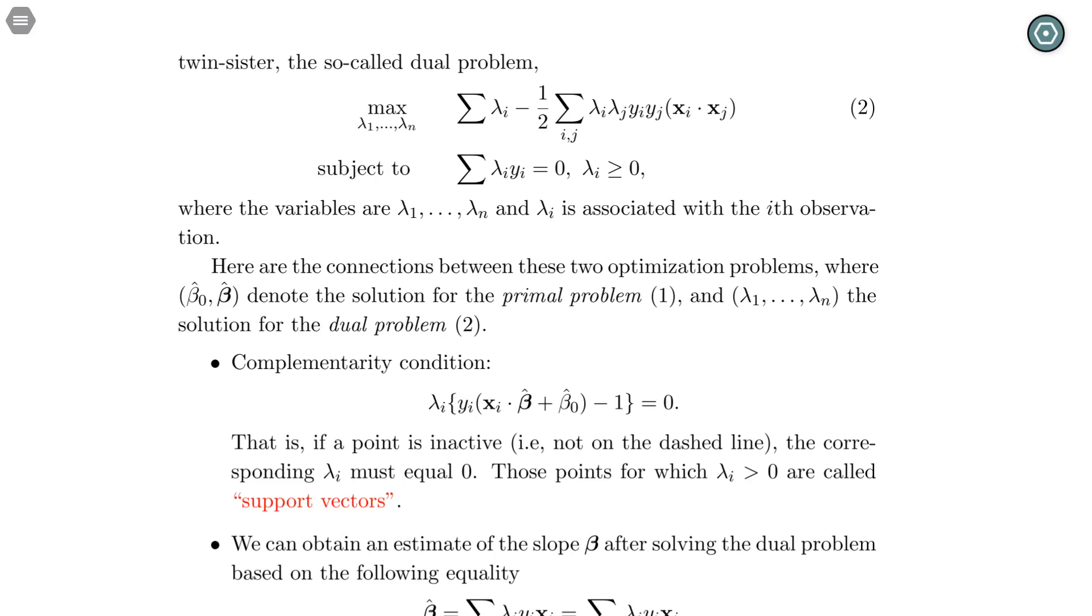So that means if a point is inactive, meaning it's not on the dashed line, then the corresponding lambda_i must be zero. So only the points on the dashed line whose lambda_i will be non-zero, and those points are called the support vectors. And only a small number of points are support vectors.